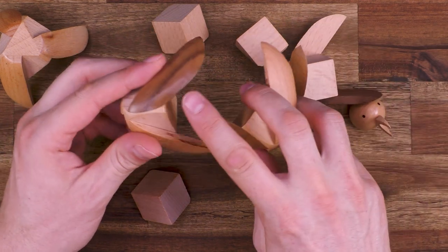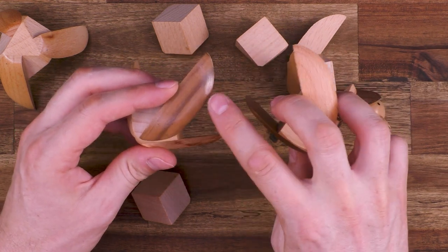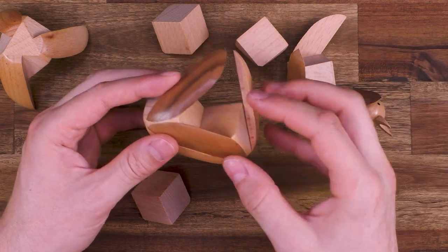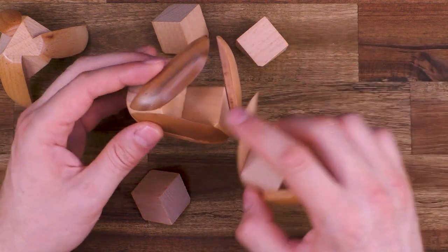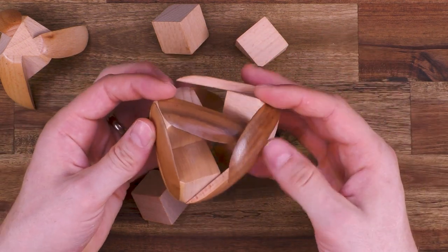So at first, what you need to understand is that this curved shape here of the dark pieces is the top side. Okay, so I will arrange now these three pieces here with the curved upper side like so.